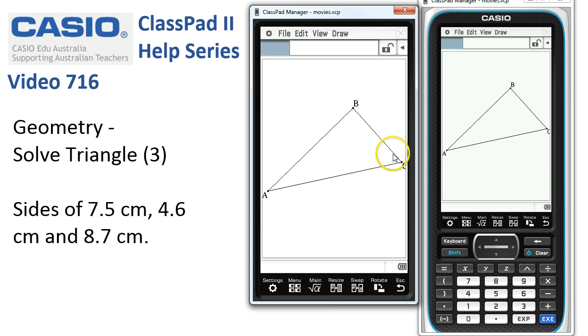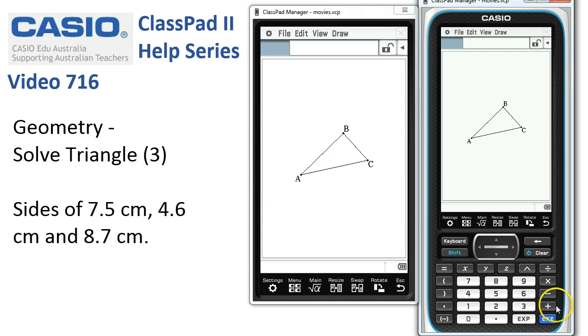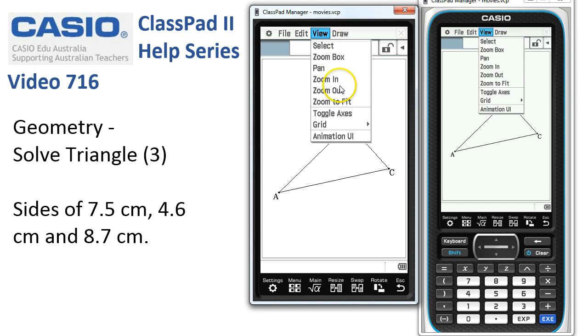If your triangle doesn't quite fit the screen properly, remember there's minus zoom out, plus zoom in, or equals the autoscale function, which can also be accessed under the view zoom in, out, zoom to fit menus.